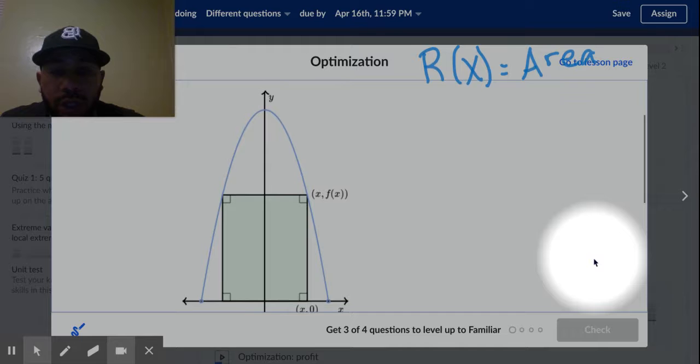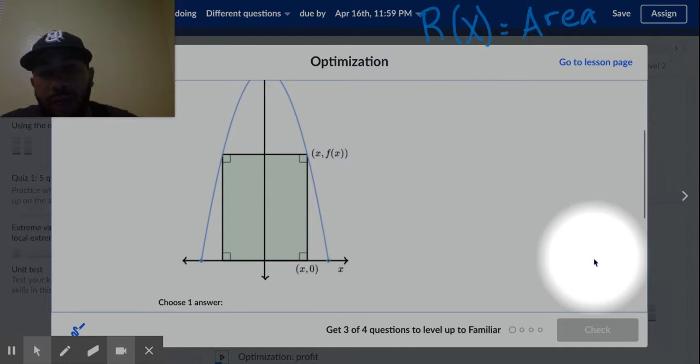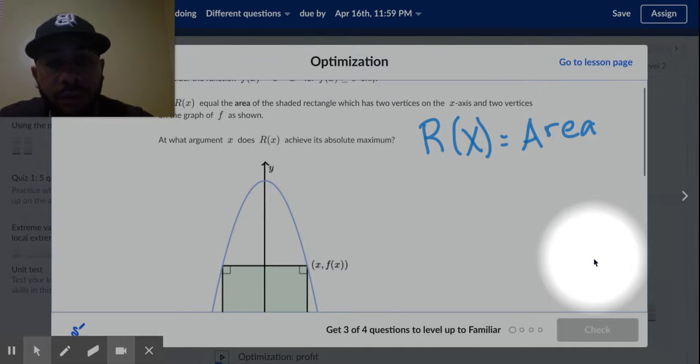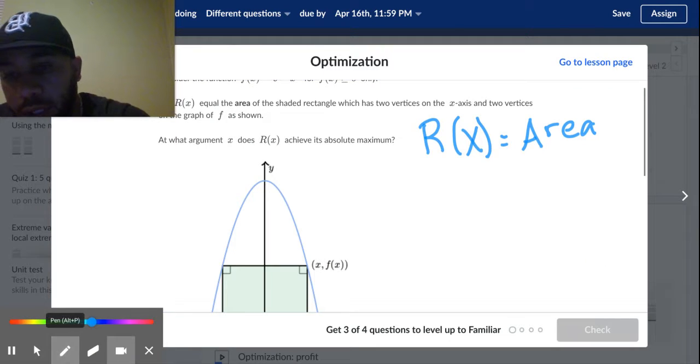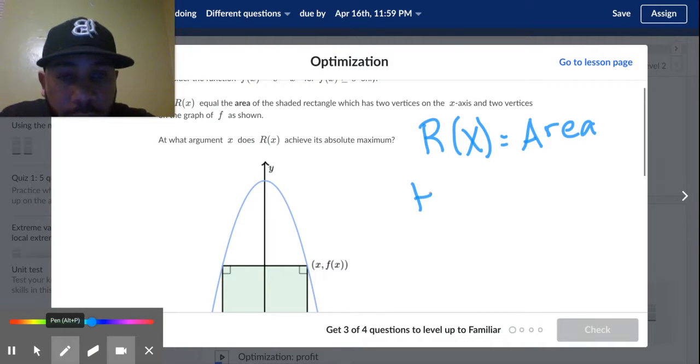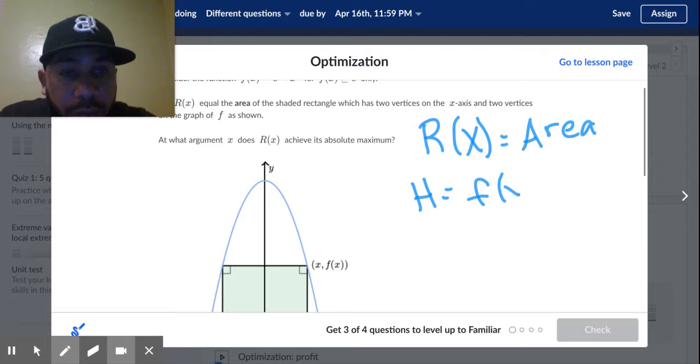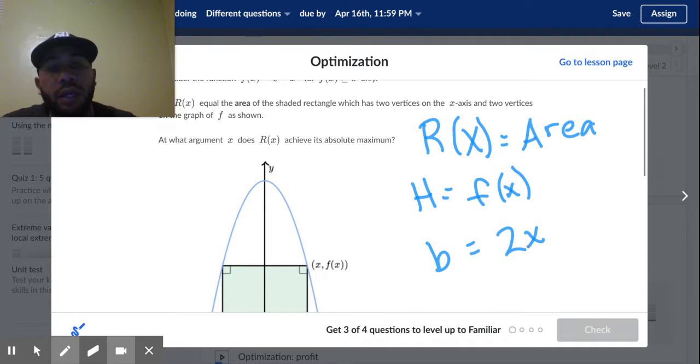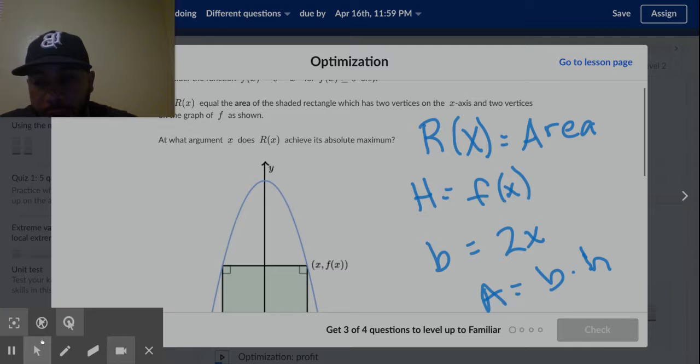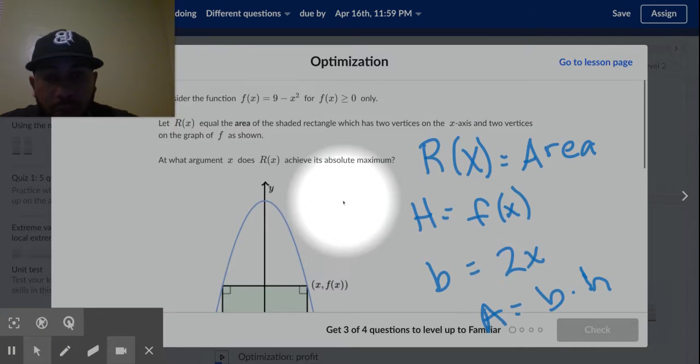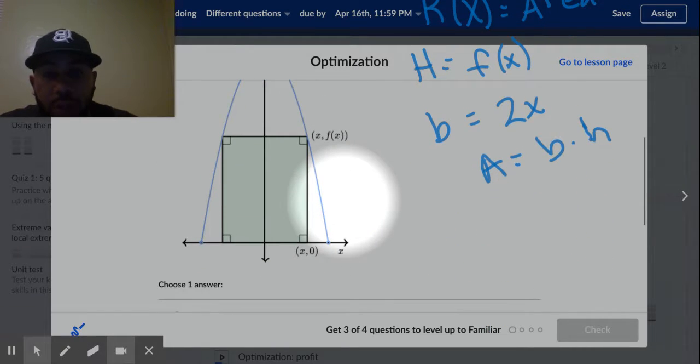Right, so we know that the area here, well the height is going to be changes. We're looking at it. The height is going to be equal to f(x), right? And the base though, the base is going to be equal to 2x. And we know area is base times height. Let me scroll so you guys can see what I'm talking about here.